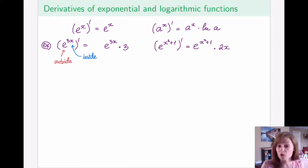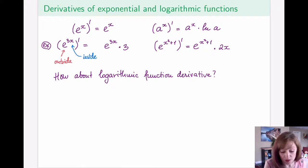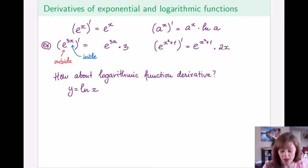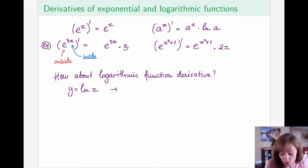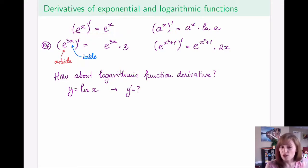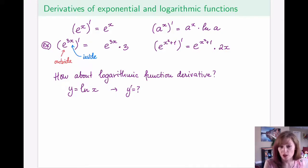Now for the derivatives of logarithmic functions. Let's take a look at the one with base e, since that's the one we mostly work with. So we want y prime for y equals ln(x). We already know how to take derivatives of exponential functions, so as the first step it makes sense to transform this into an exponential function and then apply implicit differentiation.